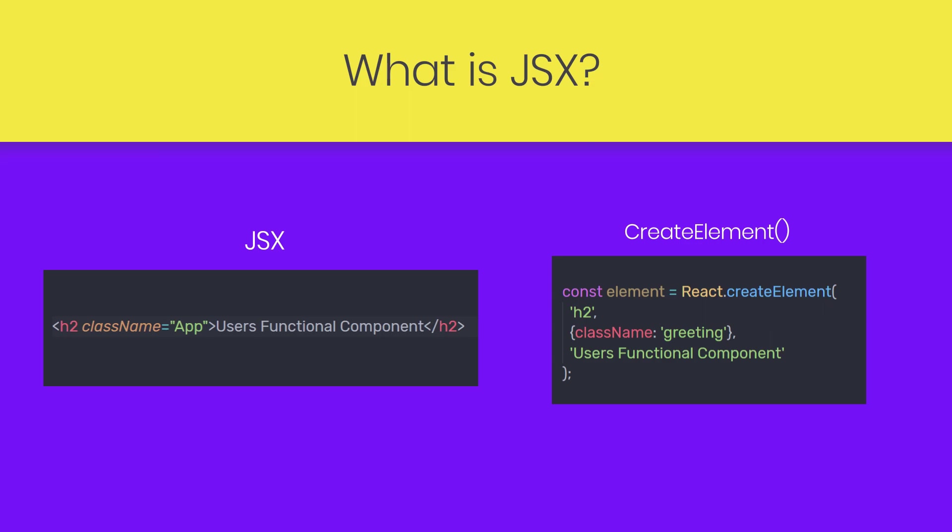There is nothing special about this method. It takes the first parameter as the element, the second is the element argument, and the third is the text of the element. If you want, you can create your HTML elements using this method as well, but it will take a lot of time to create a simple UI. So instead of using this React method, we're going to use JSX, and React will do the heavy lifting for us. The ability to store a JSX element in a variable and use JavaScript with curly braces makes JSX more powerful.